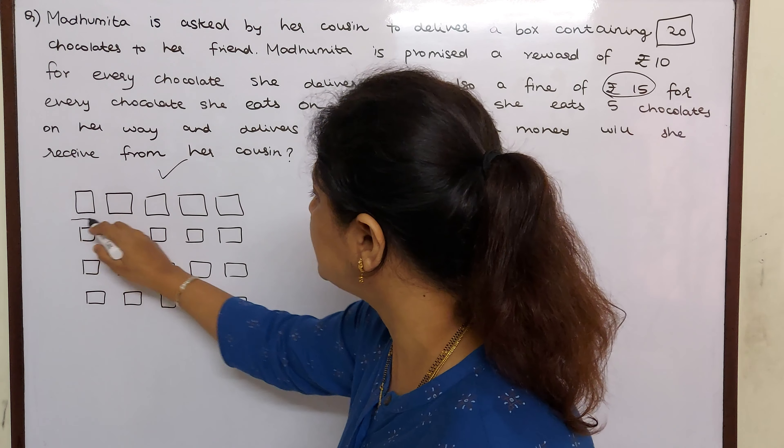Now let us see the reward and the fine. Reward of Rs. 10 for every chocolate she delivers. So for 15 chocolates: 15 into 10 equals 150 rupees. For each chocolate she delivers, she gets Rs. 10 reward — so instead of adding 15 times, 15 into 10 is 150. Now she ate 5, so fine: Rs. 15 fine for each chocolate eaten, that is 5 times — so 5 into 15 is 75.